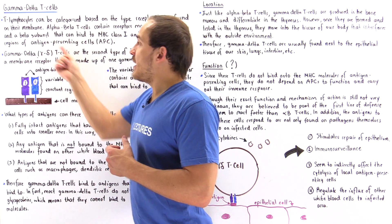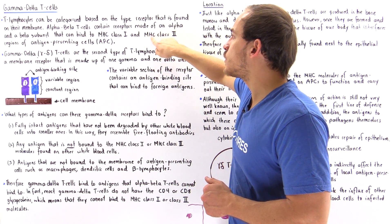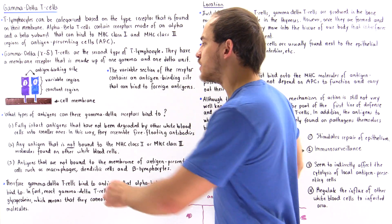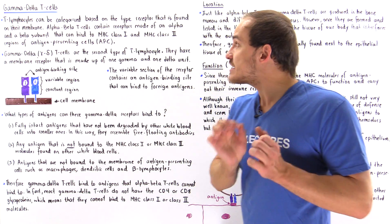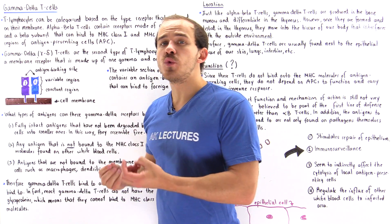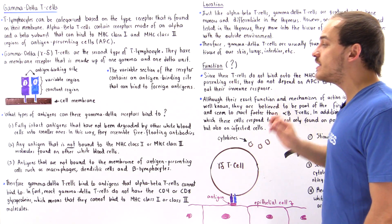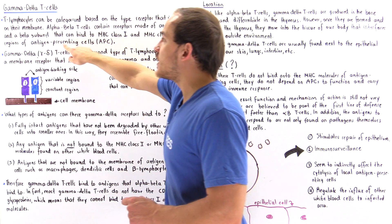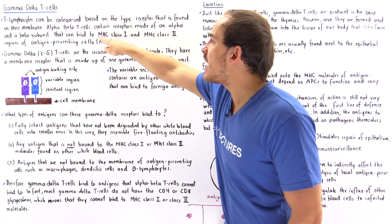Alpha-beta T cells only bind to antigens found on either the MHC class 1 or class 2 complex on antigen-presenting cells. But gamma-delta T cells do not actually need the MHC class 1 or MHC class 2 complexes to bind to antigens. They can bind to fully intact antigens that have not yet been degraded by other white blood cells, such as macrophages. Recall that antigen-presenting cells degrade the antigens and only display a small portion of the antigen on the MHC complex.